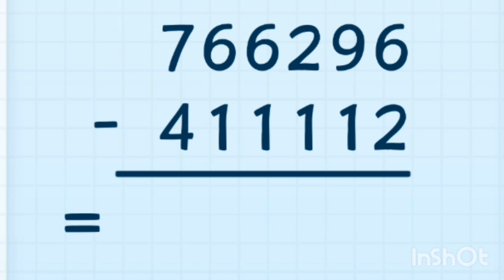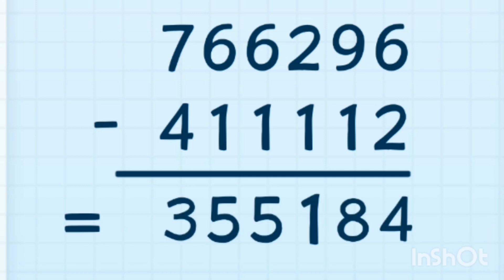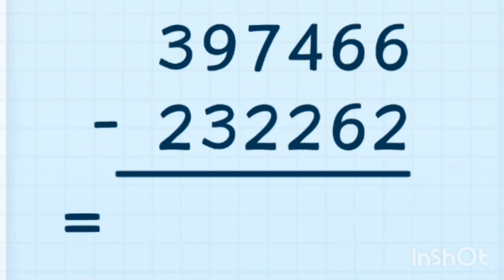6 minus 1 equals 5. 6 minus 1 equals 5. 7 minus 4 equals 3. For the next three questions, try to change by yourself — learn by yourself. Three activities for you.